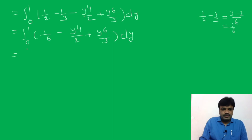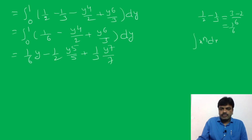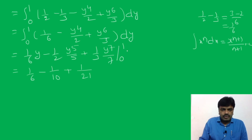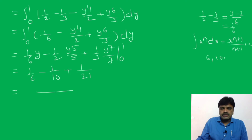That is equal to integral 0 to 1 of (1 by 6 minus y-power-4 by 2 plus y-power-6 by 3) dy, since LCM of 2 and 3 gives 3 minus 2 equals 1 by 6. That equals 1 by 6 into y, minus 1 by 2 into y-power-5 by 5, plus 1 by 3 into y-power-7 by 7, between 0 to 1. Using the formula integral of x-power-n dx equals x-power-(n+1) by (n+1).